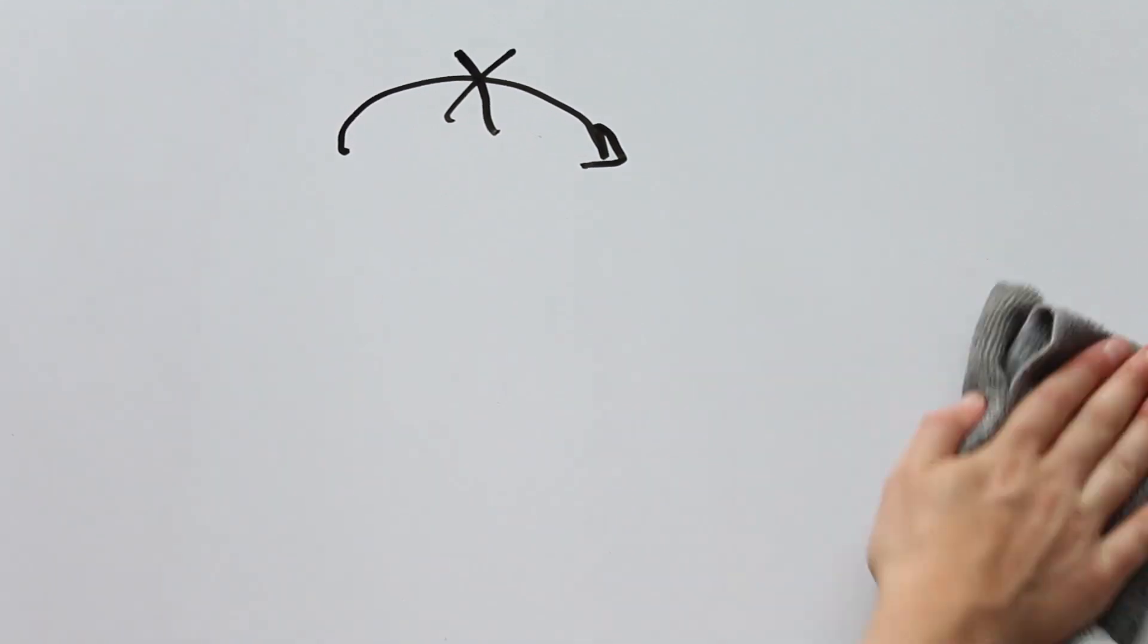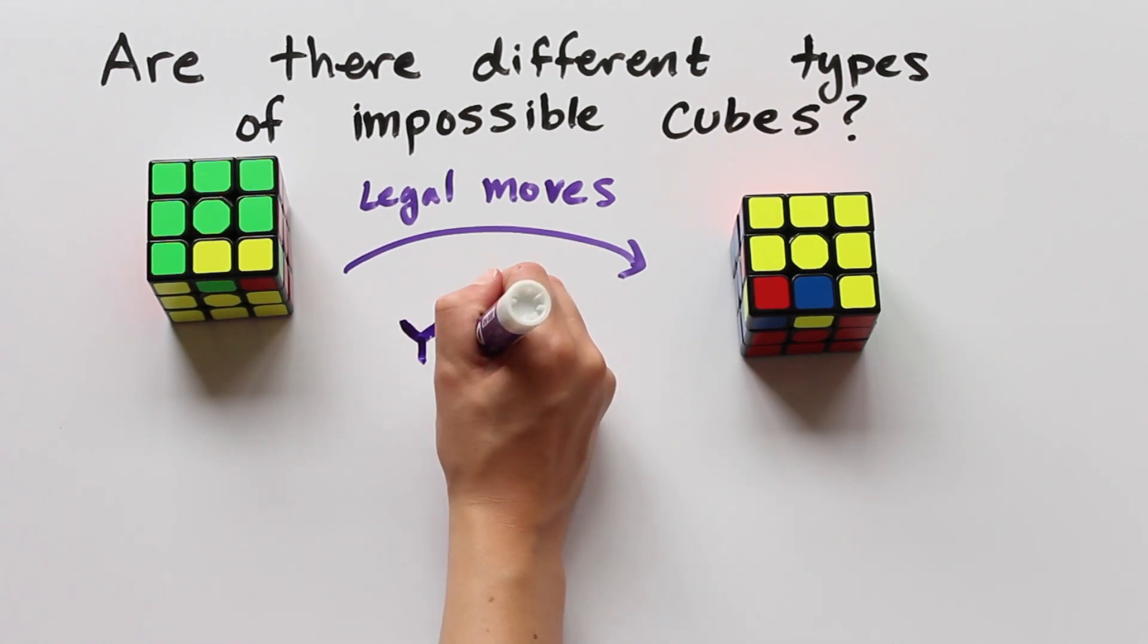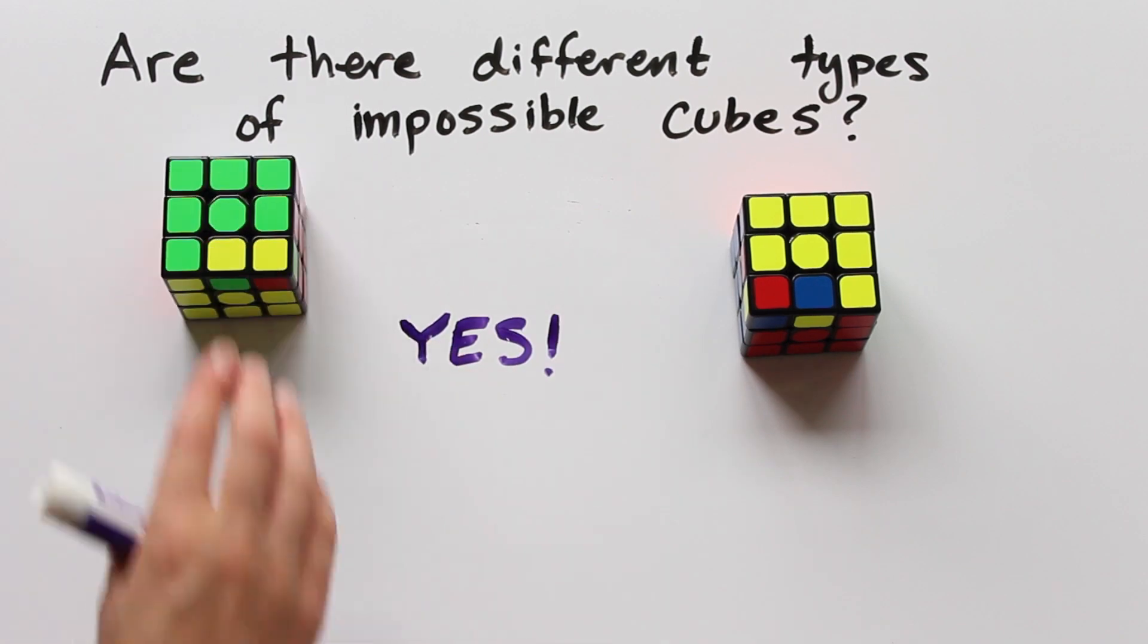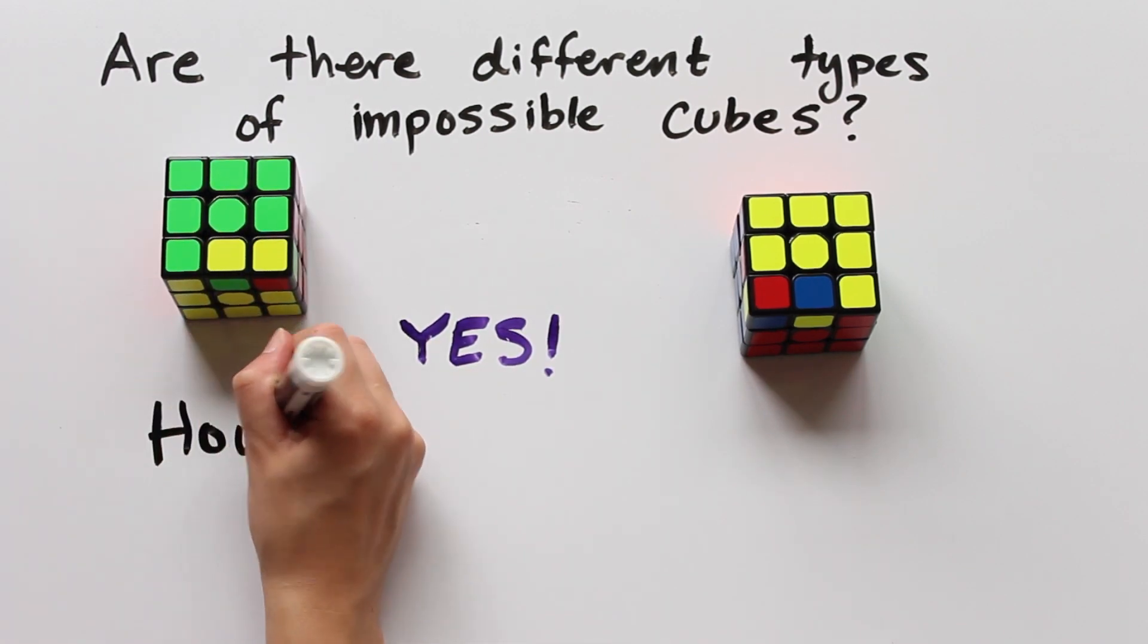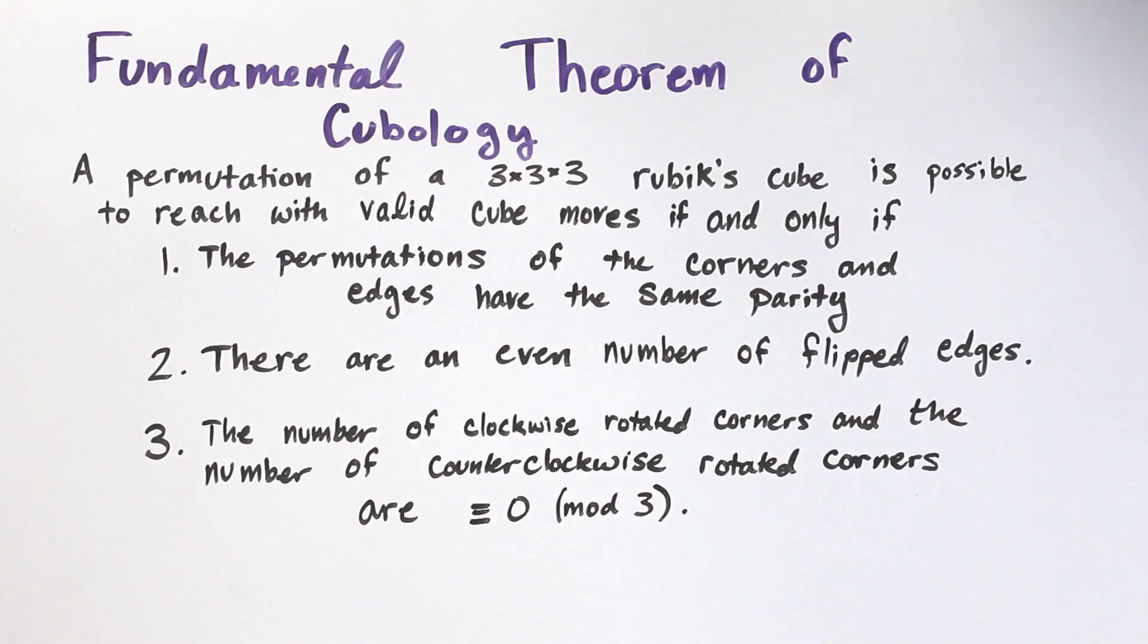With this example, we can answer our question: there are different types of impossible cubes. But it doesn't seem like we yet have the complete story. I wonder how many different types of impossible cubes there are. In order to answer this, we need to count all of the ways that an arrangement can fail the conditions in the fundamental theorem of cubology.